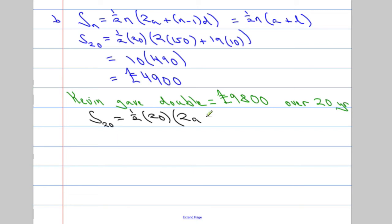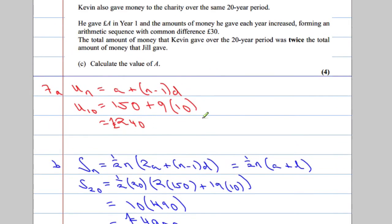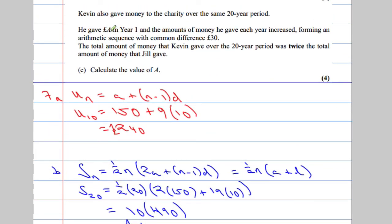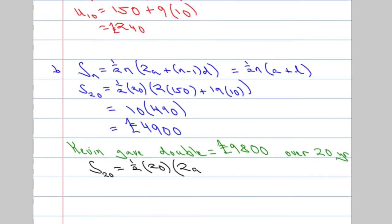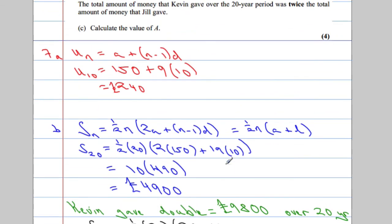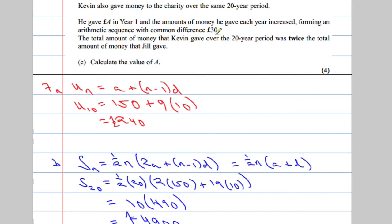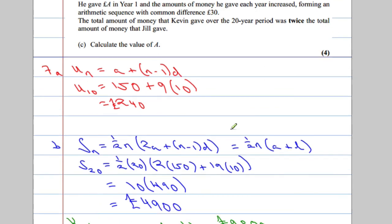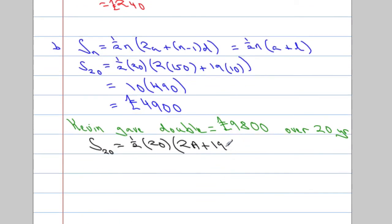A in this case, the first amount, well, it tells us he gives A pounds, capital A. So I'm going to write that as 2A with a capital A. Like this. So he gives this much in the first year. Plus N minus 1, which is going to be 19, when we worked it out, times D, the common difference. Now, does it tell us the common difference? Oh, it does. 30. The common difference is 30. So, 19 times 30.